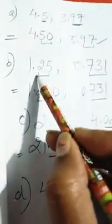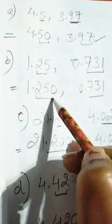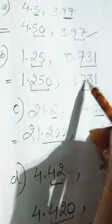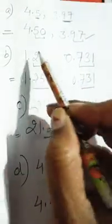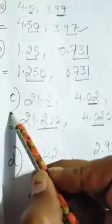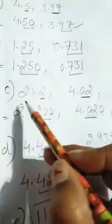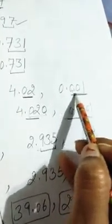In part b, 1.25 and 0.731 — after decimal two digits here, three digits there — we put one zero after 1.25 to make it 1.250, giving three digits each. Now both are like decimals. In part c, 21.2, 4.02, and 0.001 — the maximum digits after decimal are three.